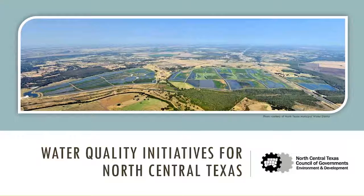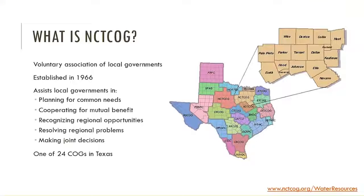To kick off today's webinar, I'm going to provide you with an overview of water quality challenges facing North Central Texas and highlight some of the initiatives that COG has underway to address them. Then I'll throw it over to our presenters who will discuss different strategies for managing on-site sewage facilities and some funding opportunities for rural communities related to sanitary sewer infrastructure. The North Central Texas Council of Governments, or the COG, is a voluntary association of local governments — one of 24 COGs in Texas — and our main function is to transcend jurisdictional boundaries to promote sound development and facilitate cooperation among our member governments.